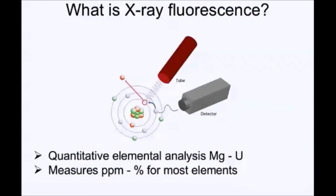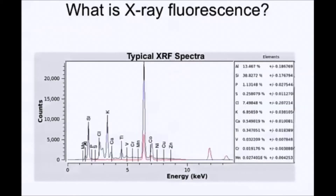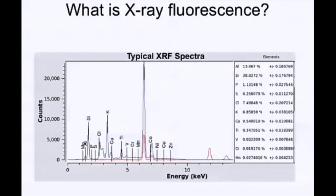On this next slide, we're showing the user interface — how the operator first sees the data output from the instrument. It consists of a graphic output, as you can see, and to the right-hand side of the slide it also gives you elemental breakdown, concentration, and statistical analysis. That's the output for X-ray fluorescence.